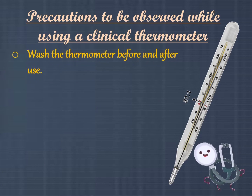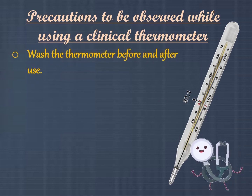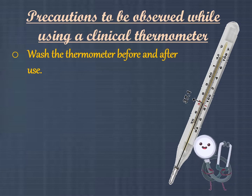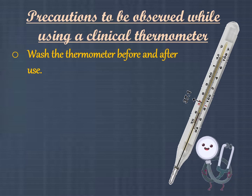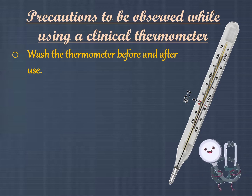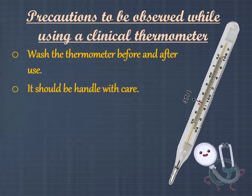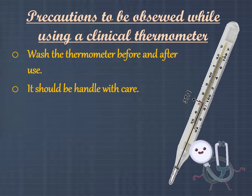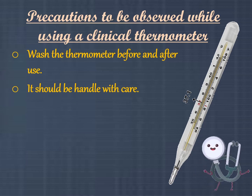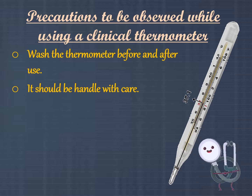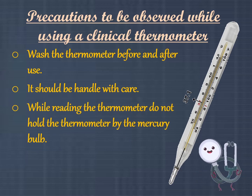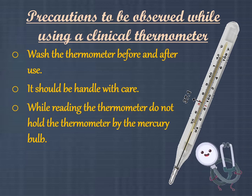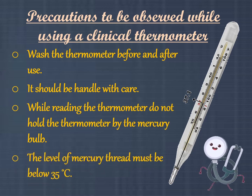Precautions to be observed while using a clinical thermometer: Number 1, wash the thermometer before and after use, preferably with an antiseptic solution, and dry it using a cotton swab. Number 2, it should be handled with care — if it hits against a hard object, it can break. Number 3, while reading the thermometer, do not hold it by the mercury bulb. Number 4, the level of mercury thread must be below 35 degrees Celsius before use.